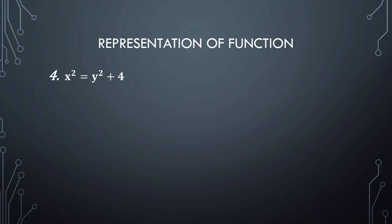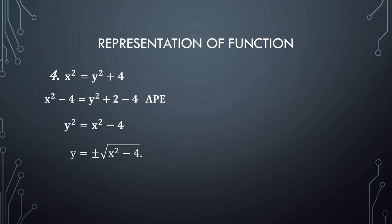Here we solve Y in terms of X. Using the addition property of equality, the equation becomes Y² = X² − 4. To eliminate the exponent of Y, we square root both sides to get Y = ±√(X² − 4). This equation is not a function because for every value of X, there are two values of Y. Number 6 is also not a function because it is not in equality form — it should have an equal symbol.